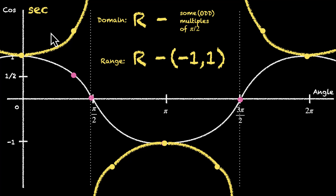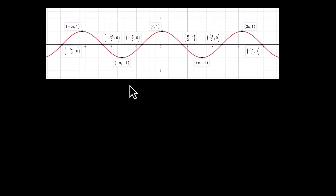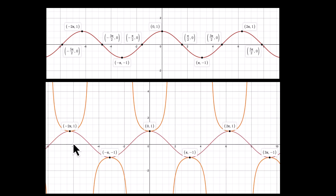Now we know how to draw the graph of cos x and sec x. If we expand this by adding more quadrants and more values, the graph of cos x will go up, down, up, down, fluctuating between 1 and minus 1. The graph of sec x will sit on top of cos x, coming down and going up with abrupt breaks at the odd multiples of pi by 2. We can do the same for all the other trig functions: sine, tan, cot, and cosec.